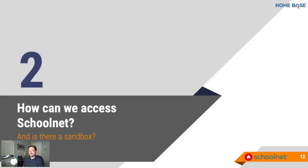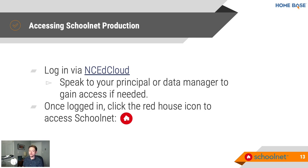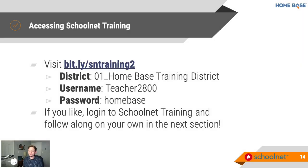To access the real version of SchoolNet, you'll log into NC EdCloud. Please speak to your principal or data manager if you're unsure of your NC EdCloud login information. Once logged in, look for the red house icon to access SchoolNet. Students follow these same steps. If you'd like to follow along, there's a SchoolNet training site available via the bit.ly link on screen. We're using username teacher2800 with password homebase. You can log into the training site, the real production version, or just watch.